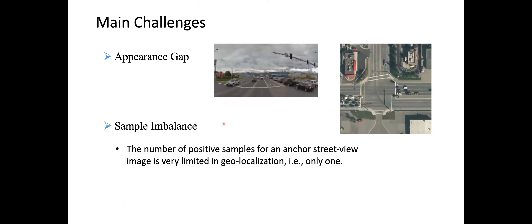There are a couple of main challenges for cross-view image geolocalization. One is the appearance gap: the query street view and the reference aerial view image look very different. We also have the sample imbalance challenge. Typically for one query image in the reference database, we have one positive match aerial image — only one positive match — but all other reference images are considered negative, so we have a lot of negative samples.